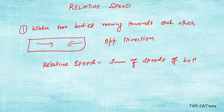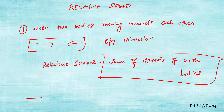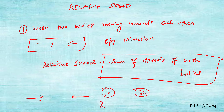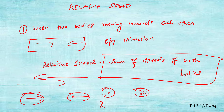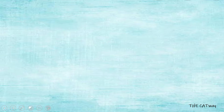Let's say there are two cars moving towards each other. One car is moving at 10 kilometers per hour and the other is moving at 20 kilometers per hour. Since they are moving in opposite directions, the relative speed would be equal to the sum of these two speeds, that is 30 kilometers per hour.